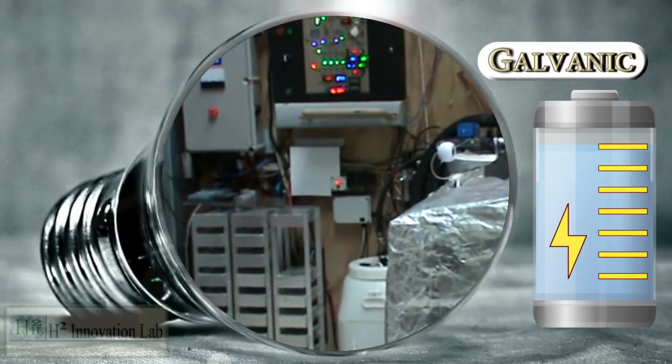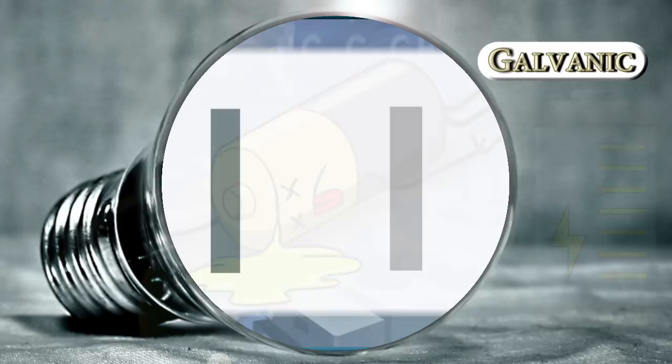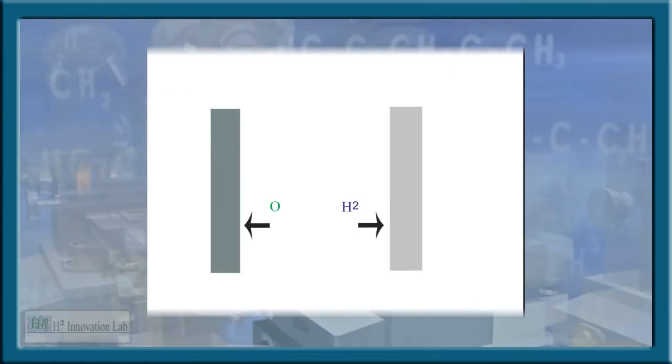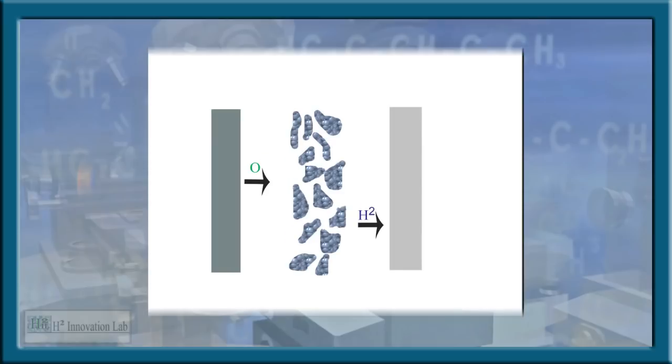But since the electrolyte is refreshed, this galvanic reaction does not die as do batteries. In conventional electrolysis, one part oxygen and two parts hydrogen is released. However, in this enhanced method, the released oxygen atom bonds with the preconditioned electrolyte to boost the galvanic reaction, increasing the cell voltage.